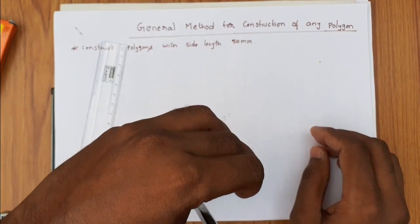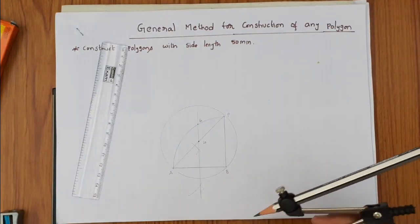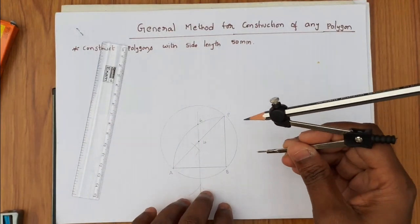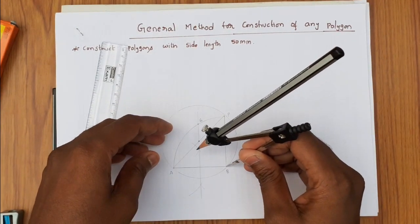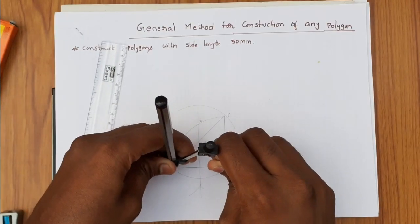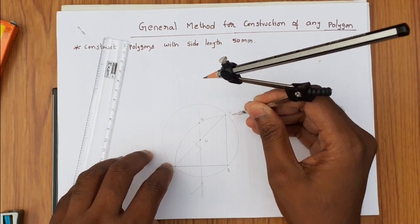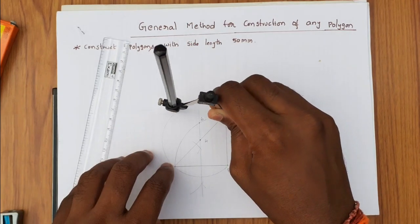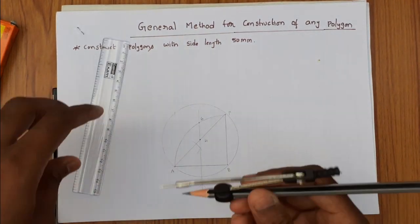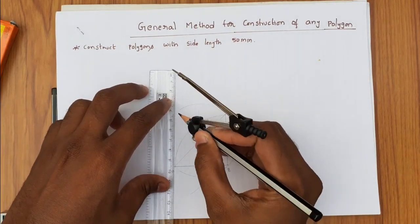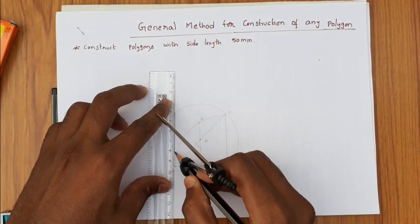Now with 4 as center and 4A as radius, draw a circle. Cut this circle with AB radius to finally get a square.